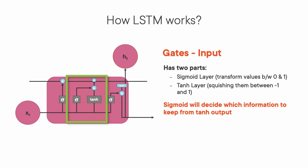At this stage, we have enough information to calculate the cell state. We utilize the output from the forget gate and from the input gate to perform this calculation, which gives us a new cell state.